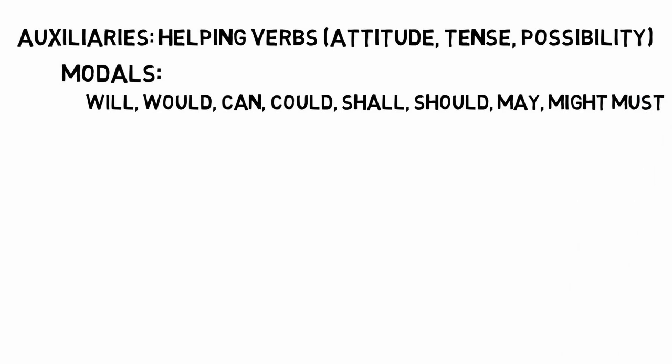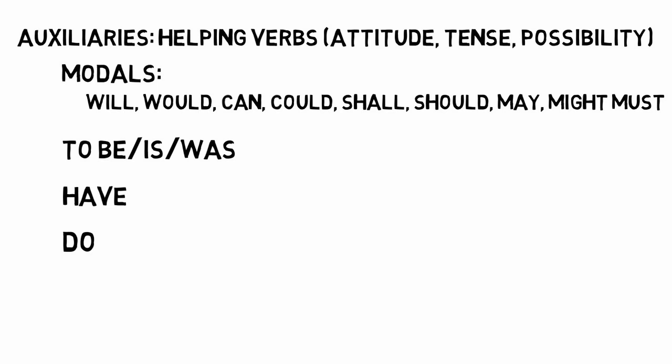The most common auxiliary verbs are 'to be' and its forms like 'is' and 'was,' which describe existence; 'have,' as in 'I have run' or 'you had been to my house'; and 'do,' as in 'I do want to marry you.' These can all be used on their own — 'he is,' 'I have something,' 'they do something' — but when used with another verb, we call them auxiliaries, as they help provide more information about the action without being the main verb.